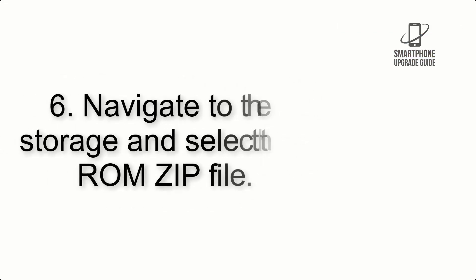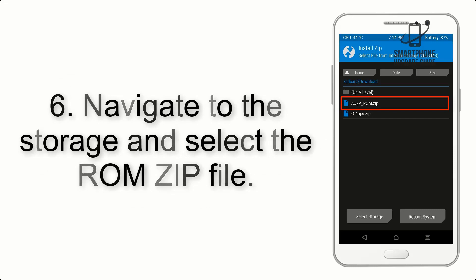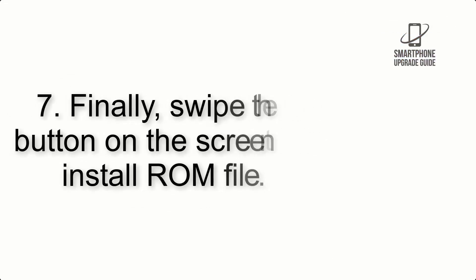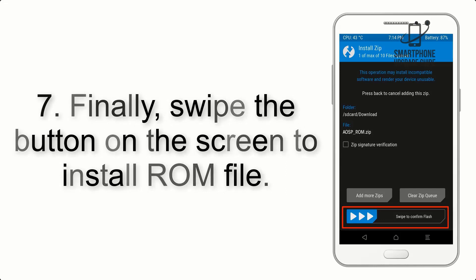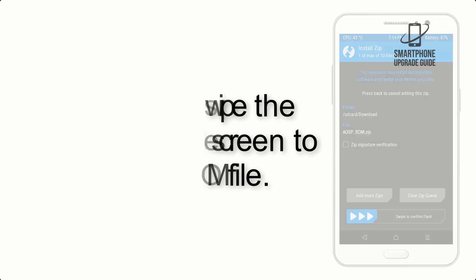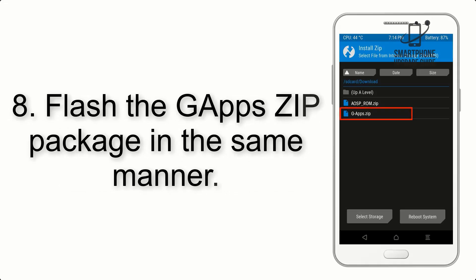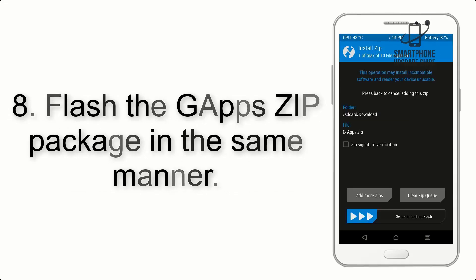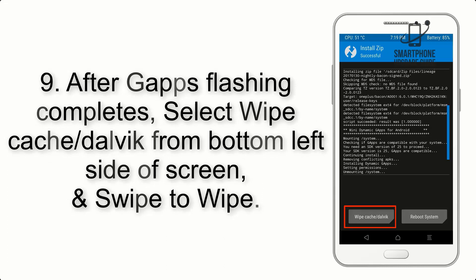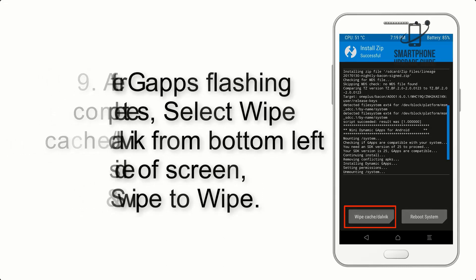Step 5: Go back to the recovery main screen and tap on the Install button. Step 6: Navigate to the storage and select the ROM zip file. Step 7: Swipe the button on the screen to install the ROM file. Step 8: Flash the GApps zip package in the same manner.